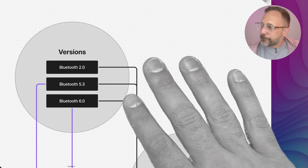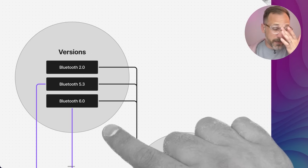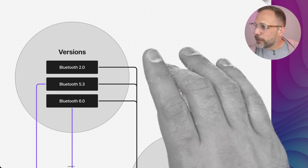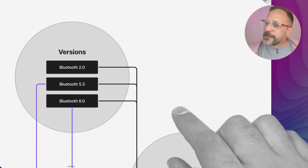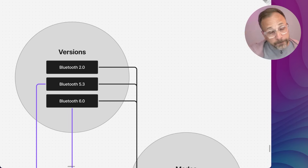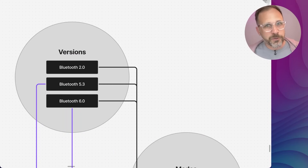Bluetooth version is the term most people are most familiar with — Bluetooth version 2, version 4, 5.3, 6.0, etc. But this is not the most meaningful thing. I would think of Bluetooth versions as collections of features or updates. What's important to know is that Bluetooth 4.0 introduced Bluetooth LE, but just because a product qualifies for Bluetooth 4.0 doesn't necessarily mean it supports Bluetooth LE. Just because the higher-level condition — the version number — is satisfied doesn't mean the specific feature you're looking for is actually supported. This is where having a mental model can help.